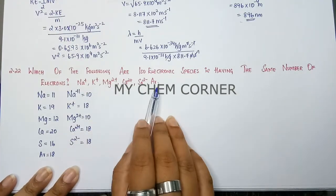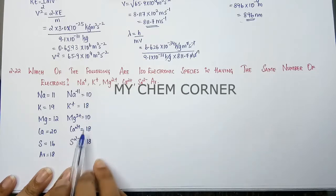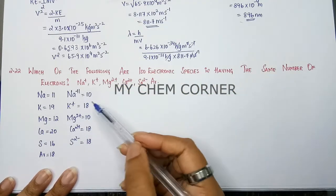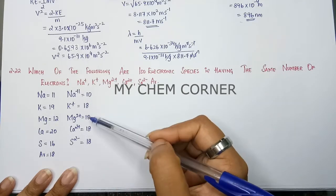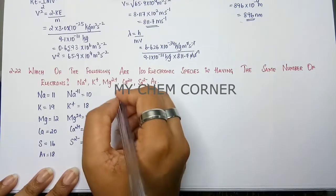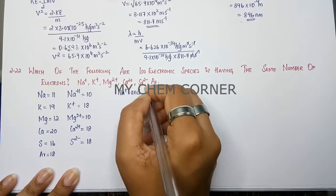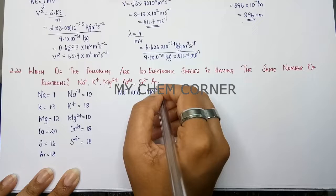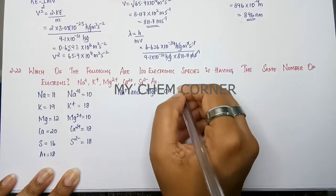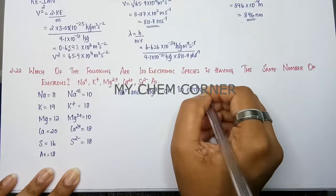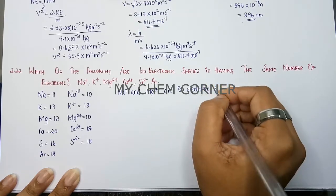Now we need to check for these values which of these are isoelectronic, which means they should have the same number of electrons. So if you see, Na+ and Mg2+ have the same number of electrons. So Na+ and Mg2+ are isoelectronic species.